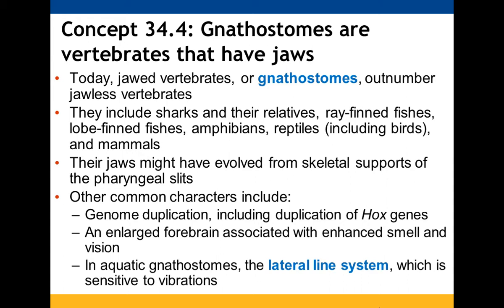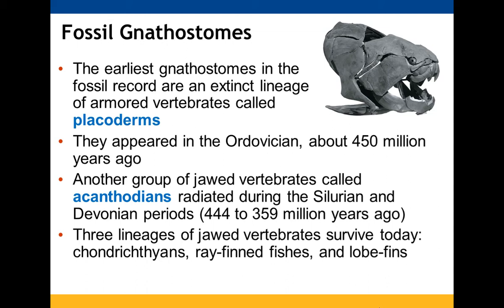Other key derived characters of gnathostomes include an enlarged forebrain with enhanced sensory capabilities. Jaws were first seen in an extinct lineage of gnathostomes, appearing about 460 million years ago, with additional groups appearing in the Silurian and Devonian periods, giving rise to three major lineages.